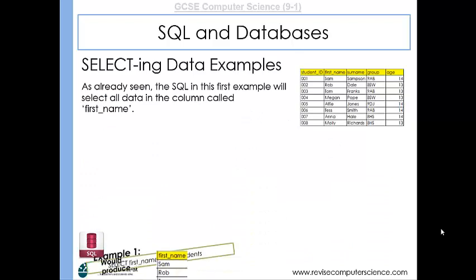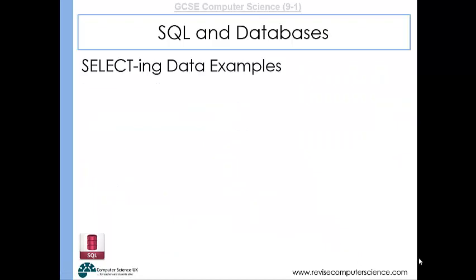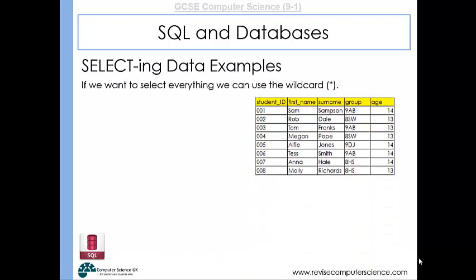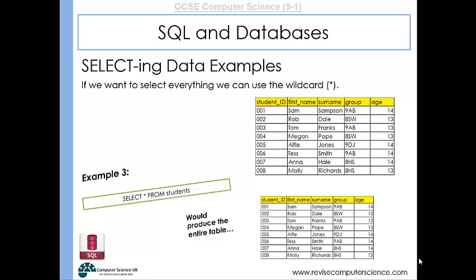If we wanted to select more than one column — for example, first names and surnames of each student — we could use: SELECT first_name, surname FROM students, and that would produce the table shown in the bottom right-hand corner. To select the entire table, we use a wildcard — a star. So SELECT * FROM students would produce the entire table, selecting everything.